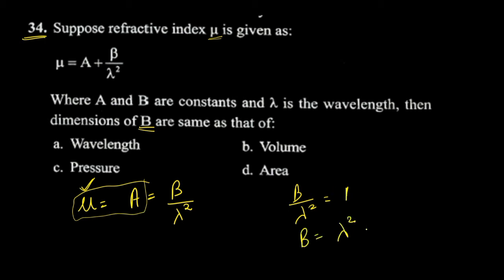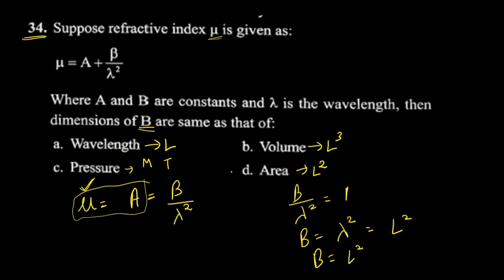So what is the dimension of lambda squared? Wavelength is L, so lambda squared is L². Therefore, B must have dimension L². Option D — this answer is correct. So the dimension equate gives us the answer for question number 34: option D. Thank you.